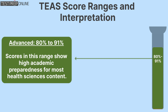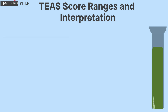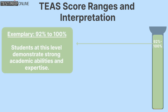ADVANCED: 80% to 91%. Scores in this range show high academic preparedness for most Health Sciences content. EXEMPLARY: 92% to 100%. Students at this level demonstrate strong academic abilities and expertise.